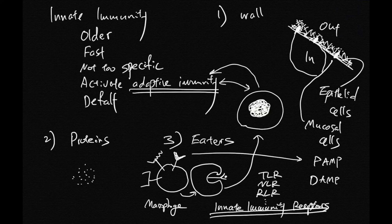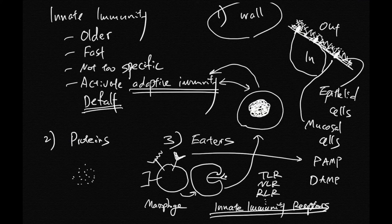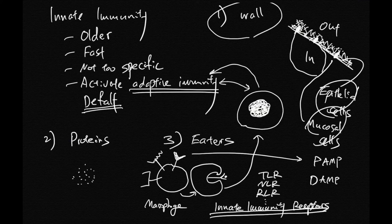So in summary, innate immunity: older, fast, not too specific, and will activate adaptive immunity. It's your default defense like the wall between outside world and inside world. You have special cells that do a good wall job.